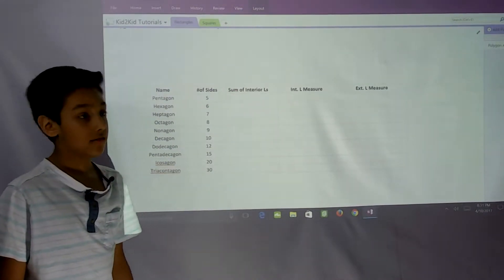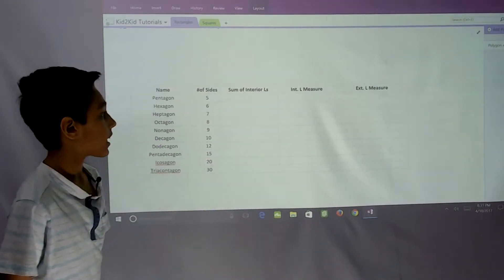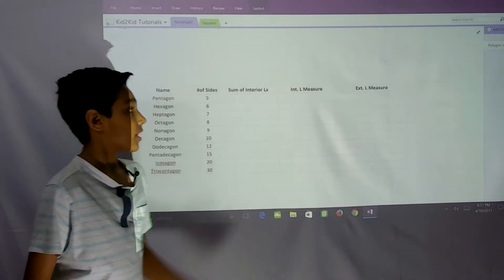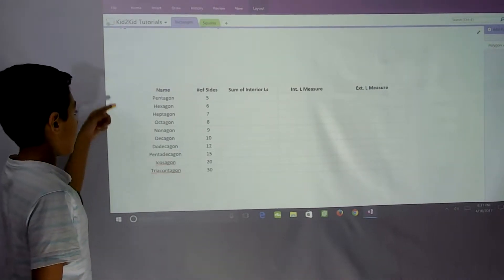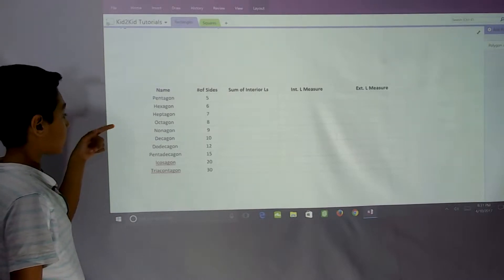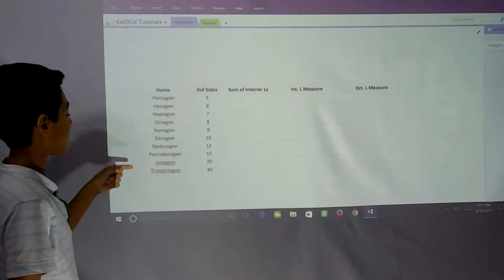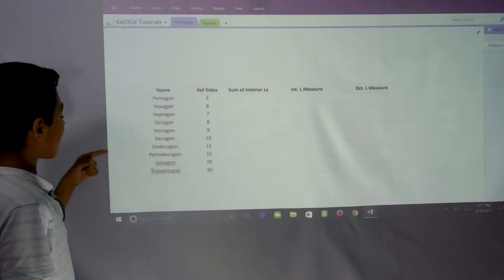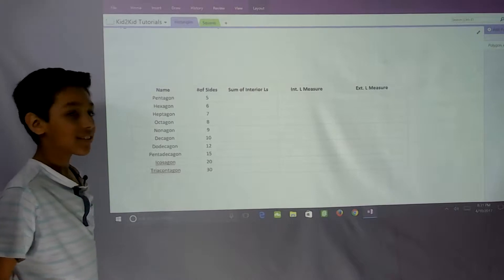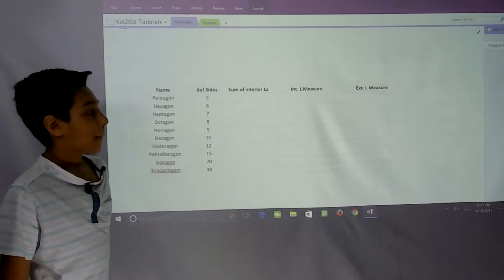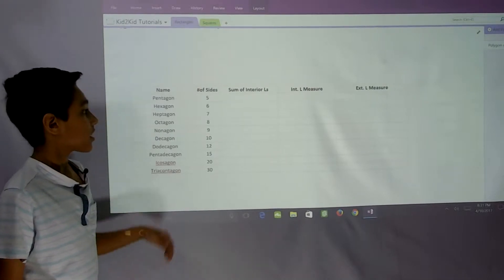We're finding the sum of interior angles, interior angle measure, and exterior angle measure for a pentagon, hexagon, heptagon, octagon, nonagon, decagon, dodecagon, pentadecagon, icosagon, and tricontagon. We have a formula to find all of these.